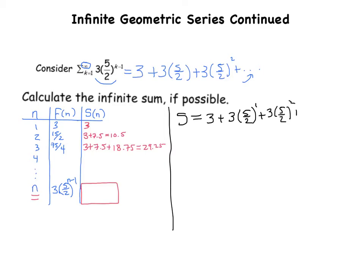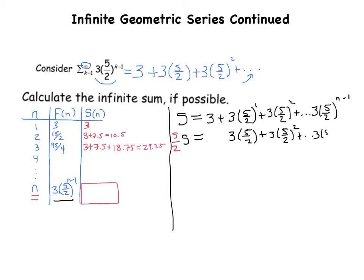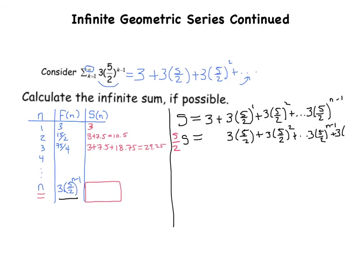It's going to keep going until 3 times 5 halves — now be careful, go over to your table. When you plug in n, that output is 3 times 5 halves to the n minus 1, because we're adding up the first n terms. Now if I multiply both sides by 5 halves, that's going to turn the first 3 into 3 times 5 halves, bumping every term's exponent up. This one's going to be 3 times 5 halves to the n minus 1, and the last one is going to be 3 times 5 halves to the n.